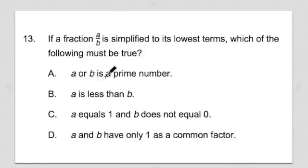A, a or b is a prime number. B, a is less than b. C, a equals 1 and b does not equal 0. Or D, a and b only have 1 as a common factor.